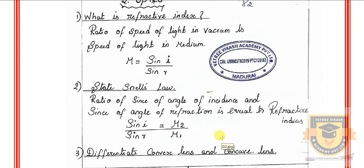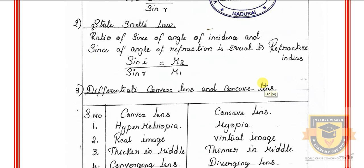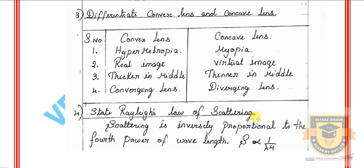First question: What is the refractive index? Second question: State Snell's law. Third question: Differentiate convex lens and concave lens. Fourth question: State Rayleigh's law of scattering.